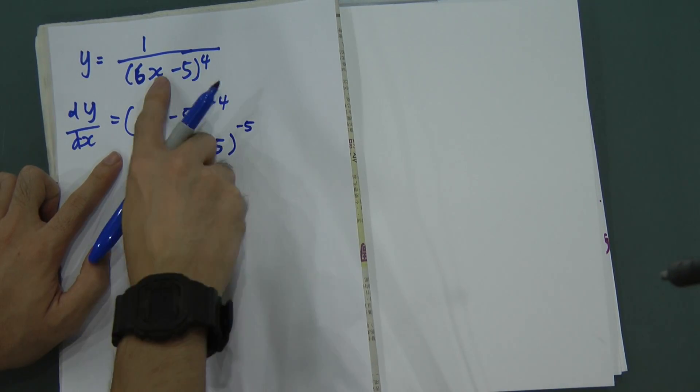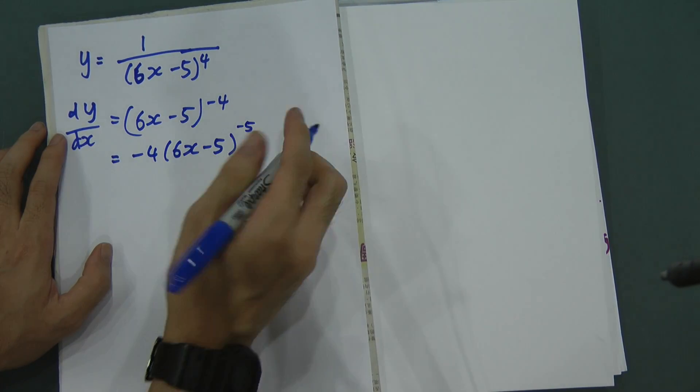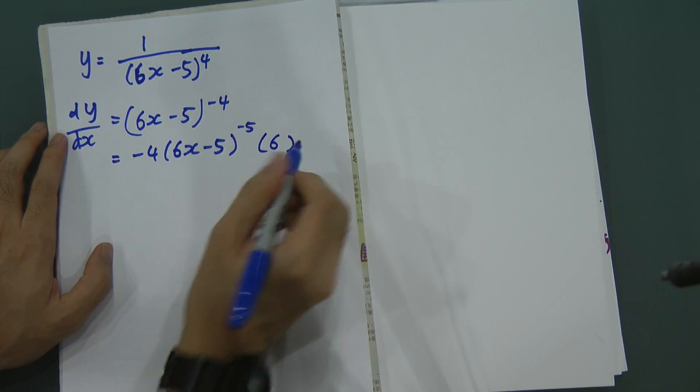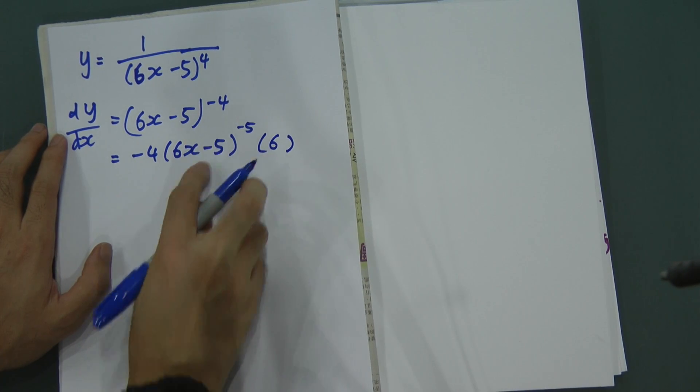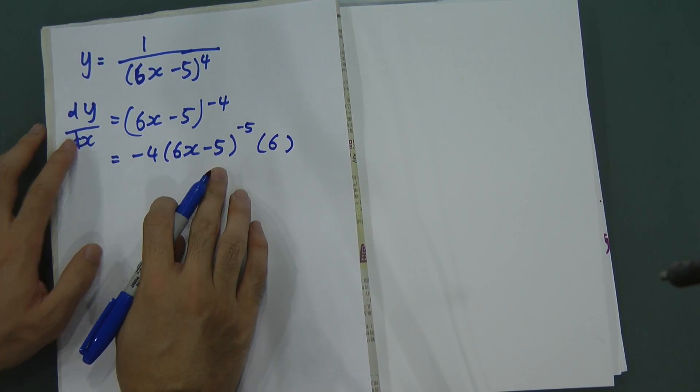And then, for this one, got bracket and got power one, you have to differentiate one more time for inside. So, 6x minus 5, when you differentiate the inside, you'll get 6. Because 6x, you'll get 6. And minus 5, you just ignore it because it didn't exist.